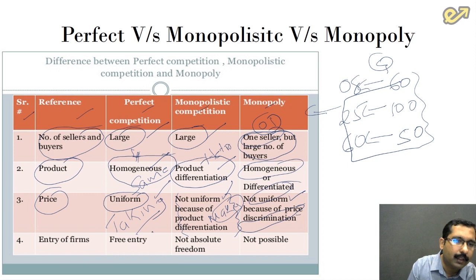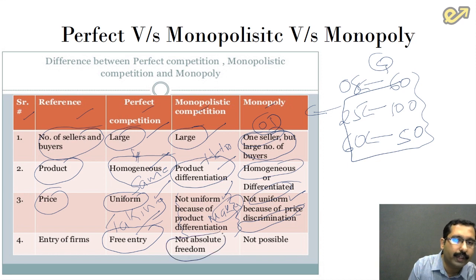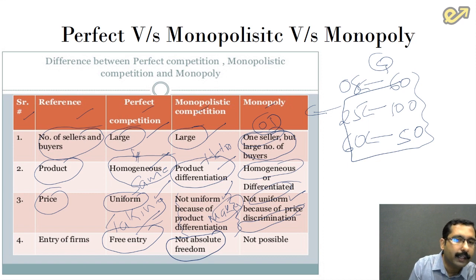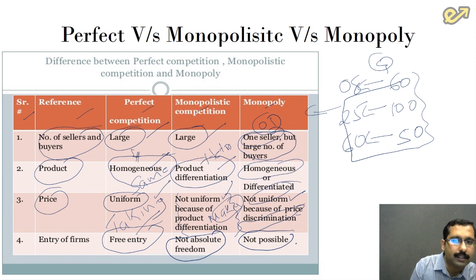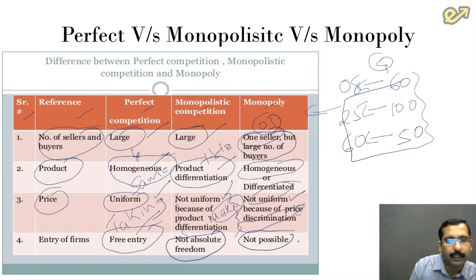The last difference is about entry into markets. In perfect competition, there is free entry and free exit — anybody can enter and anybody can exit. In monopolistic competition, there are some barriers but they are not very high, so entry is possible. But in a monopoly market, it is not possible for others to enter because barriers are very high. These barriers can be political, legal, technological, social, cultural, or economic in nature, or a combination of all, effectively stopping others from entering the market.